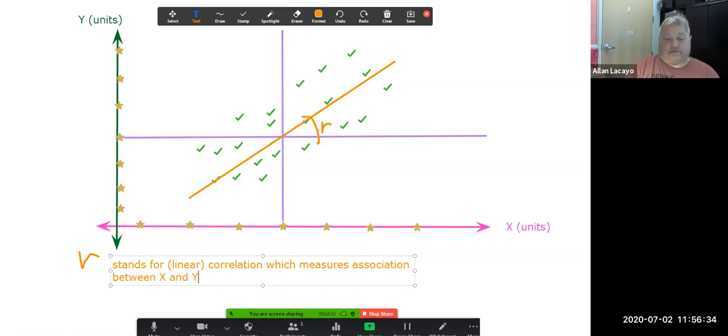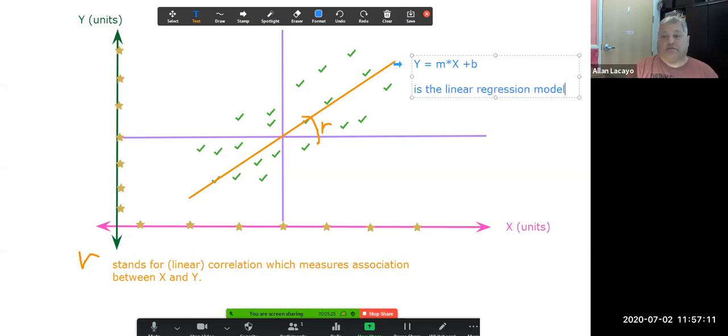Another thing it does is it helps us describe a model, a linear model referred to as the linear regression model, in which the variable X explains the variable Y.